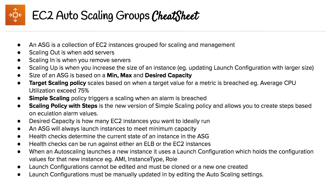When an auto scaling group launches a new instance, it will use a launch configuration which holds the configuration values of that new instance — for example, the AMI, instance type, and role. Launch configurations cannot be edited and must be cloned or a new one created. Launch configurations must be manually updated by editing the auto scaling group settings.